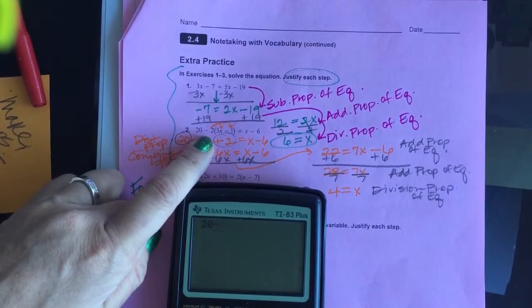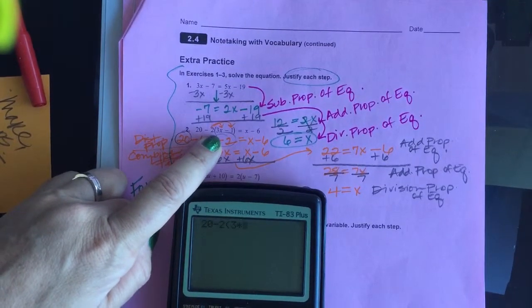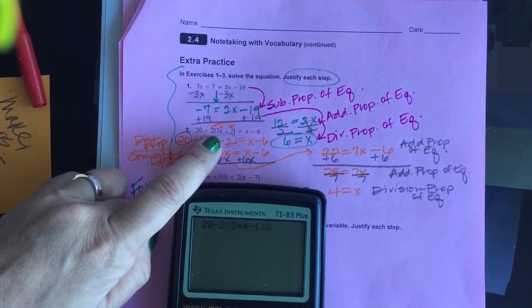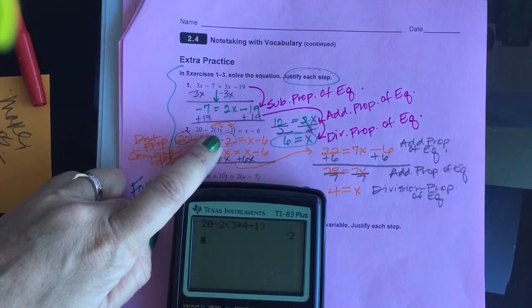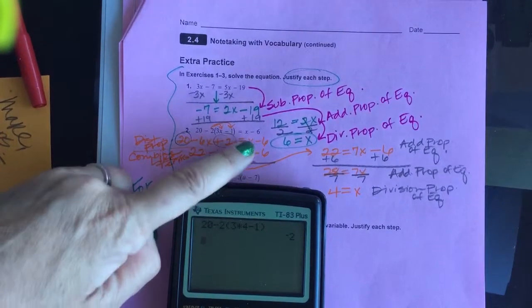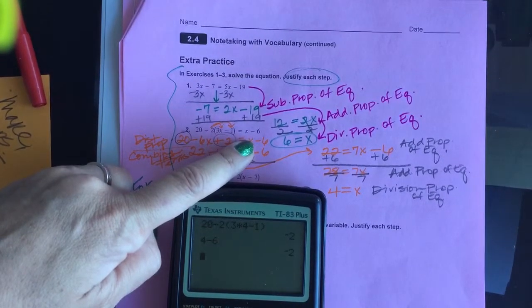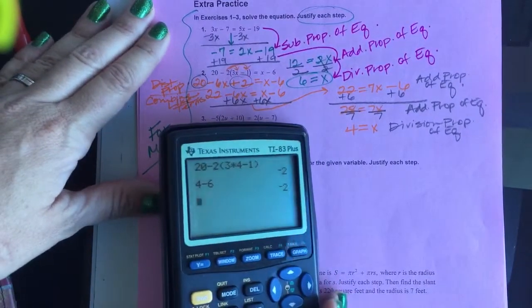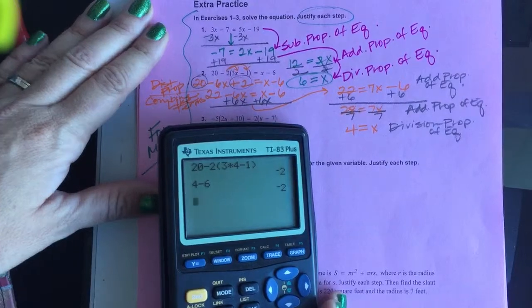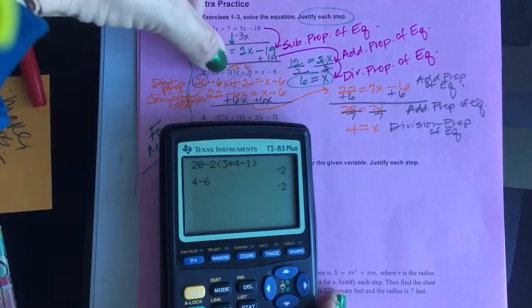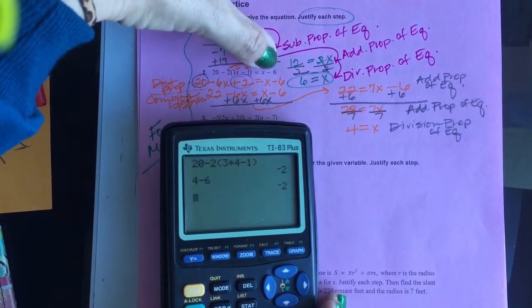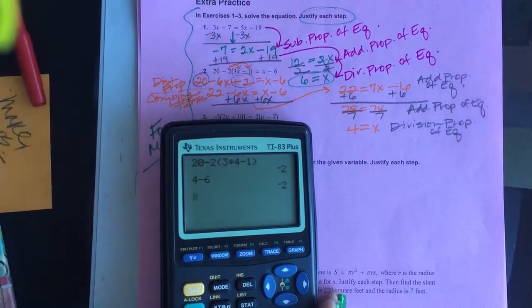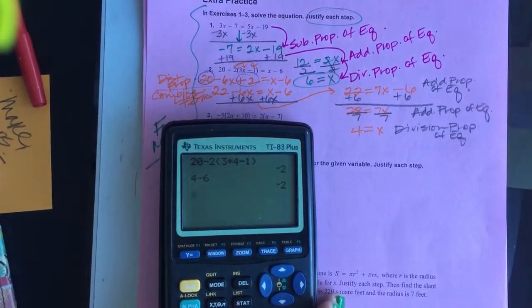So 20 minus 2, I'm going to open up parentheses, 3 times 4 minus 1. Close that up. I got negative 2. On the right-hand side, 4 minus 6. Sure enough, it's negative 2. So every time you get an answer, you can use your calculator to double-check. Like, I put the answer into the left, got my negative 2. I put my answer into the right, got my negative 2. Replace the x with 4 on both sides. And since they were equal, I know my answer's right.